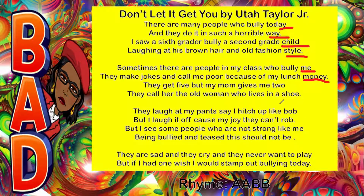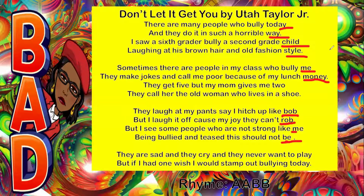Now, sometimes the rhymes are what we call sight rhymes — you're able to look at the endings of words and say, 'okay, these rhyme,' for example 'Bob' and 'Rob.' But some words, when pronounced and we emphasize the sound at the very end, are sound rhymes — you have to pronounce them to hear the rhyming. So 'me' and 'money' — it's the 'ee' sound at the end of both words that makes them rhyme. And 'child' and 'style' — although they don't have the same spelling at the end, they rhyme when we sound them out.